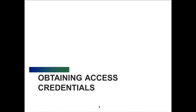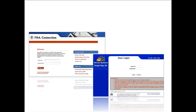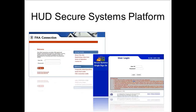First, we'll discuss how to access the CNA eTool. The CNA eTool is hosted on HUD's secure systems platform. The security measures require a user ID, known as an M-ID, and password to access the CNA eTool. This process protects the confidentiality of the data submitted through the secure systems platform. It takes time to get credentials for secure systems, so those who don't currently have access should begin the process as soon as possible.